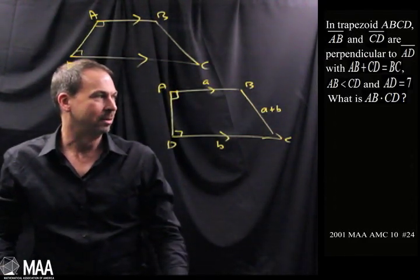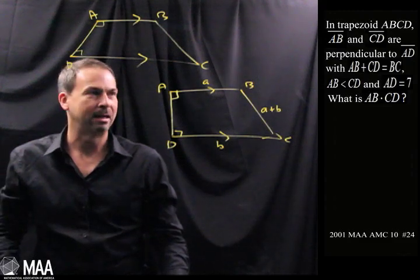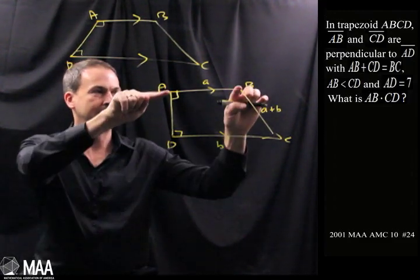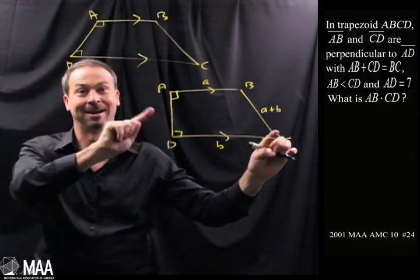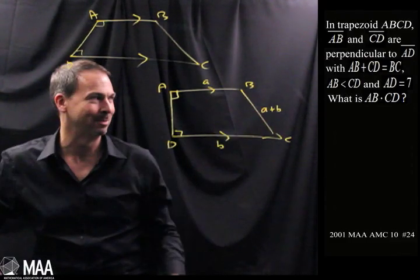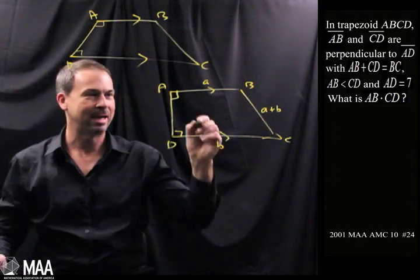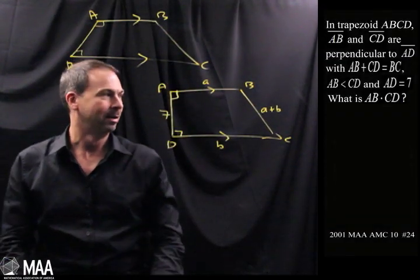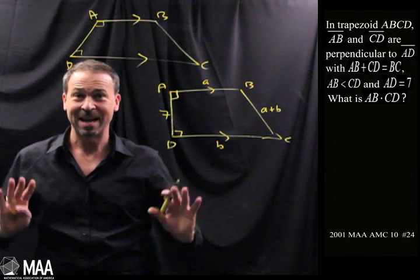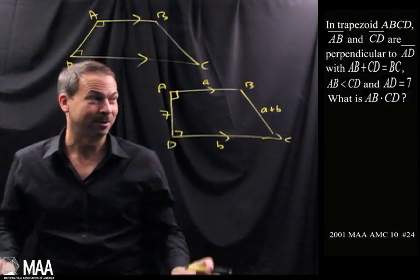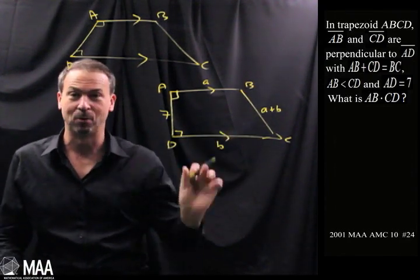Third piece of information: AB is less than CD. Length AB is less than length CD. This length is shorter than that length. I lucked out, I had to draw it that way. With AD equals 7. AD is this side, that's 7 inches. That's the information of the question. Finally, I've at least got the question in my head or on the board now.